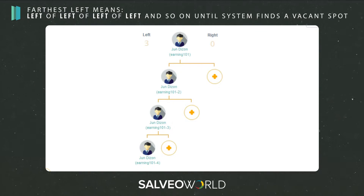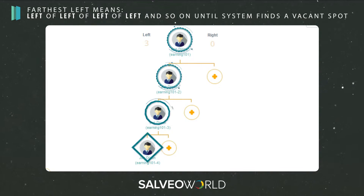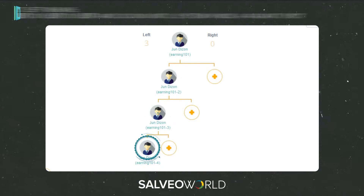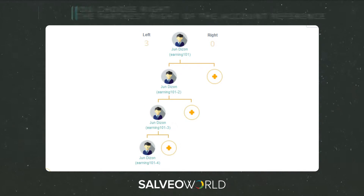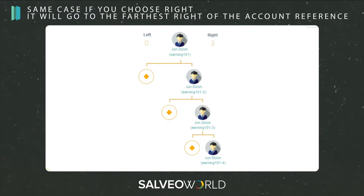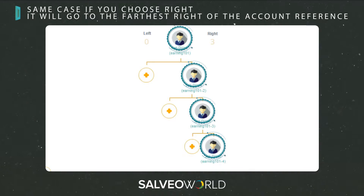Farthest left means left of left of left of left and so on until the system finds a vacant spot. Same case if you choose right — it will go to the farthest right of the account reference.